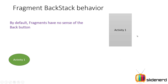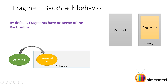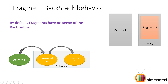Let me show you a visual representation. Here you have Activity 1. Then the user navigates to Activity 2, which contains Fragment A. Now the user goes to Fragment B from the same Activity 2 — in other words, you have gone from Fragment A to Fragment B.